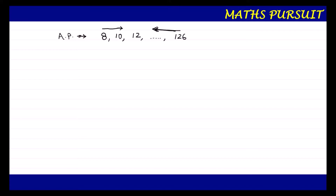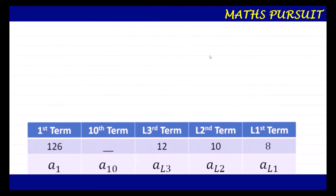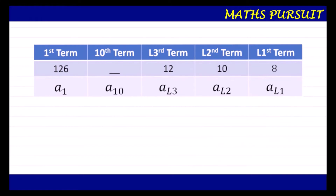For this purpose, what we can do is simply reverse the given arithmetic progression, so that the calculation will be really super easy. If we reverse this arithmetic progression, we will have 126 at the start, then some numbers in between, and then 12, 10, 8 at the end. I have considered 8 as our last first term, since the original question gave us 8 as the first term.